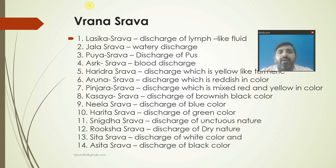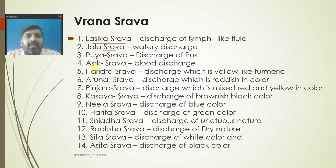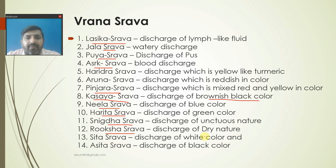Coming to the Shrava or exudation from the ulcer - the 14 types: Lasika Shrava (clear fluid lymphatic exudation), Jala Shrava (water-like discharge), Phuya Shrava (pus discharge), Asrika Shrava (blood discharge), Haridra Shrava (yellow like turmeric), Aruna Shrava (reddish colored), Anjana Shrava (mixed red and yellowish), Kasaya Shrava (brown-blackish), Neela Shrava (bluish), Harita Shrava (greenish), Snigdha Shrava (unctuous discharge), Ruksha Shrava (dry nature), Sita Shrava (cold and whitish), and Asita Shrava (blackish in color).